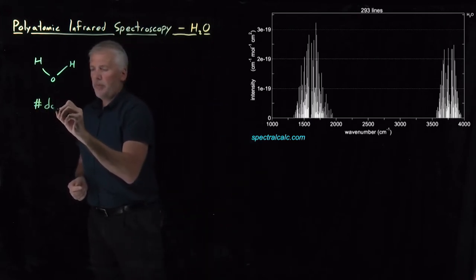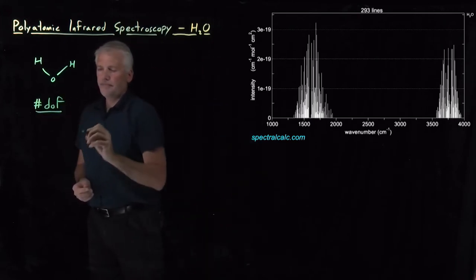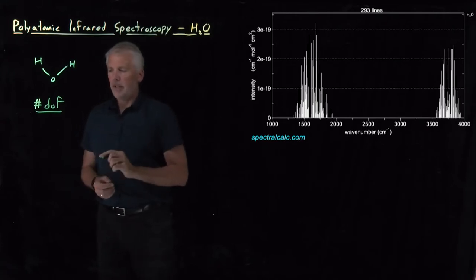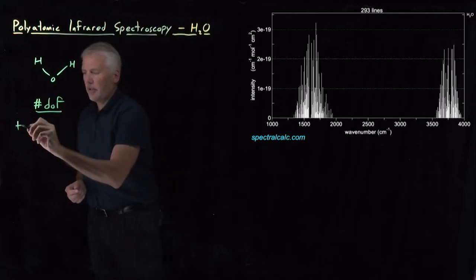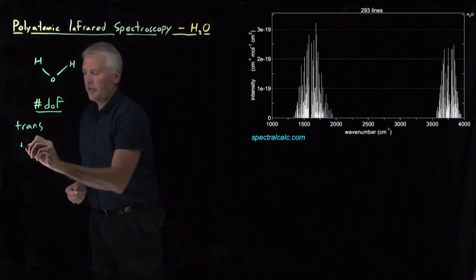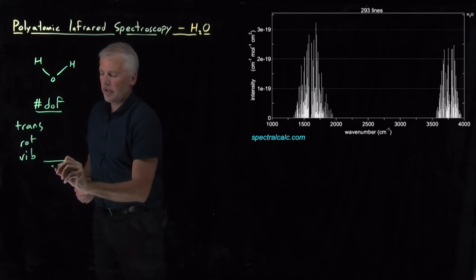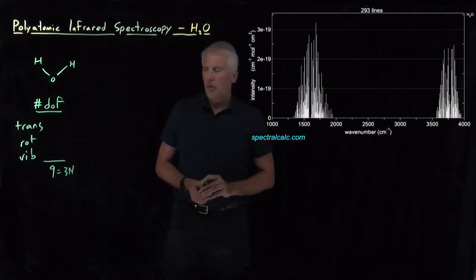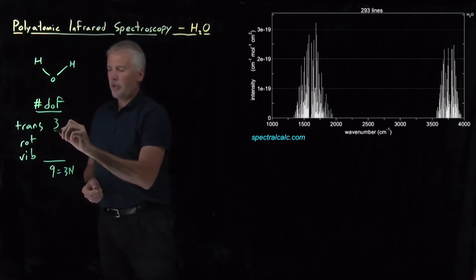In order to understand what those peaks come from, we can again count the number of degrees of freedom for translational, rotational, and vibrational motion. It's still a triatomic molecule, so we should still have nine degrees of freedom total, three of which are translational.